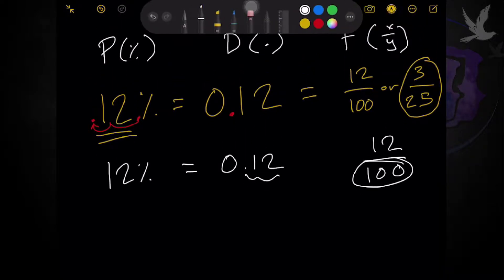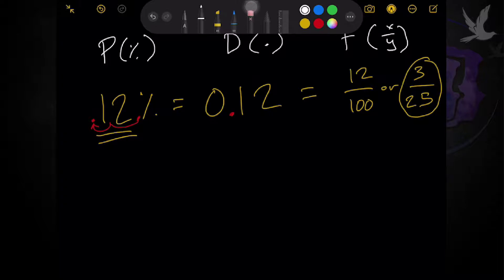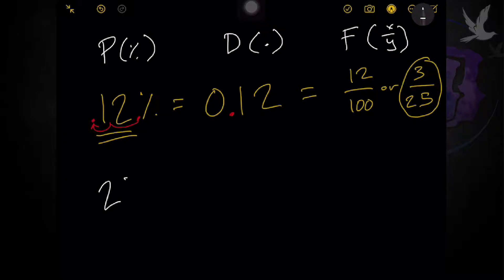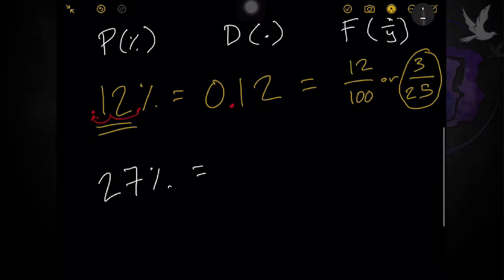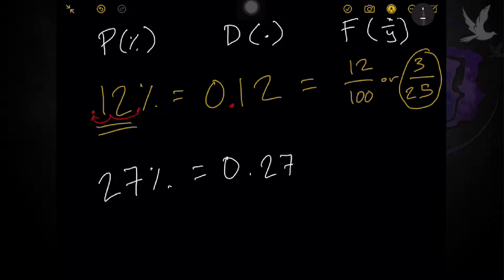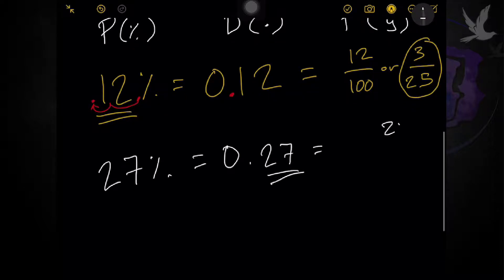Let's take another example. As long as you get the logic of it, it's easy. Let's say we have 27%. As a decimal, move two decimal places to the left — one, two — so that gives us 0.27. As a fraction, since 27 is below 100, you can just write 27/100. If you can simplify it, then do so, but 27 is a prime number so we can't simplify it — nothing to divide unless it is divisible into 100.